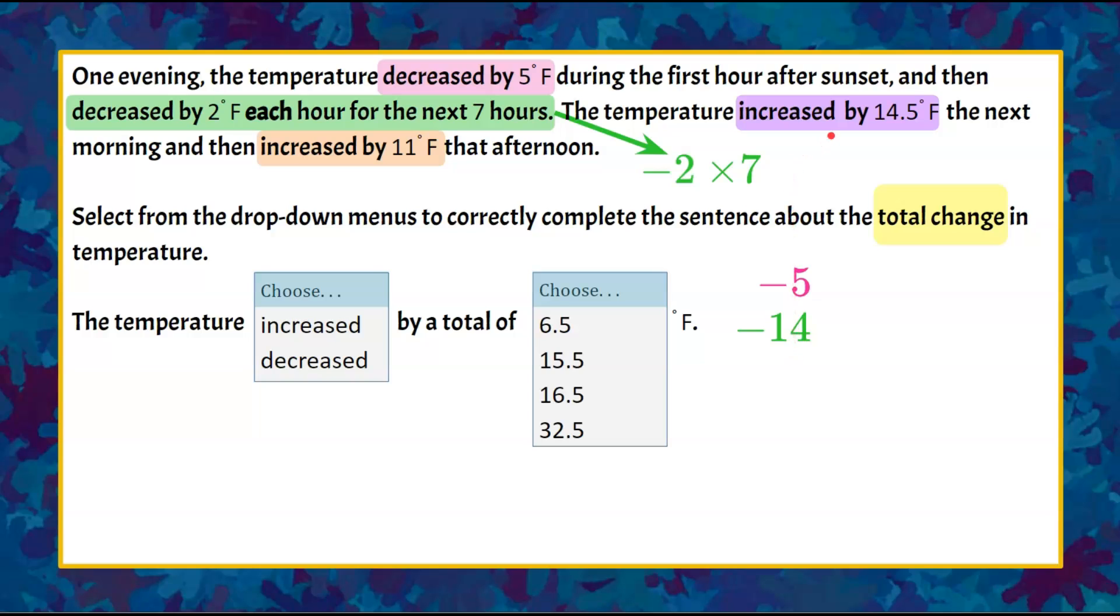Now we're going to increase. The next one increased by 14.5, so that's going to be add 14.5 or positive 14.5. Then we had another increase of 11 degrees, so we're going to represent that as a positive value as well. Now to find the total amount of change, I have four different values here that changed, either increasing or decreasing. I'm going to add these all together to find the sum or the total change.